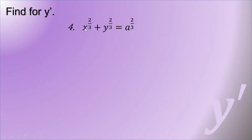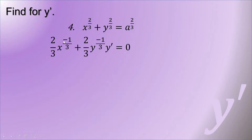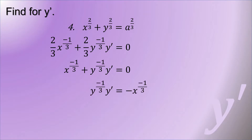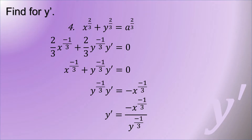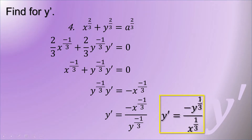Next example: x raised to 2 thirds plus y raised to 2 thirds equals a raised to 2 thirds. Using the power rule, that is 2 thirds x raised to negative 1 third plus 2 thirds y raised to negative 1 third times y prime equals 0, since a is constant. Dividing the equation by 2 thirds, then transferring the x variable from left to right, y prime equals negative x raised to negative 1 third over y raised to negative 1 third. Making the exponents positive by taking the reciprocal, y prime equals negative y raised to 1 third over x raised to 1 third.